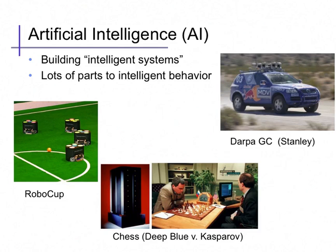Machine learning is generally considered to be a subfield of artificial intelligence. As a general field, artificial intelligence is focused on building so-called intelligent agents, which are often typified by various tasks including games like chess, now a classic man versus machine kind of scenario, autonomous behavior such as autonomously driving vehicles, and multi-agent dynamics such as robotic soccer competitions.